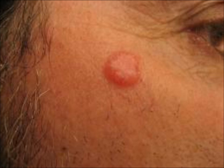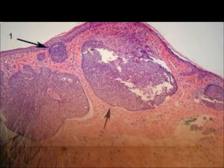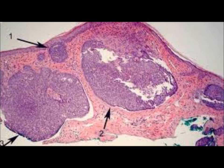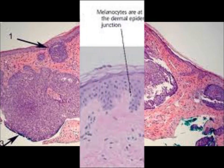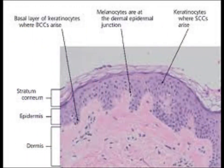How is basal cell carcinoma diagnosed? To make a proper diagnosis, doctors perform a biopsy. This usually involves taking a sample by injecting a local anesthesia and scraping a small piece of skin — a method referred to as a shave biopsy. The skin that is removed is then examined under a microscope to check for cancer cells.